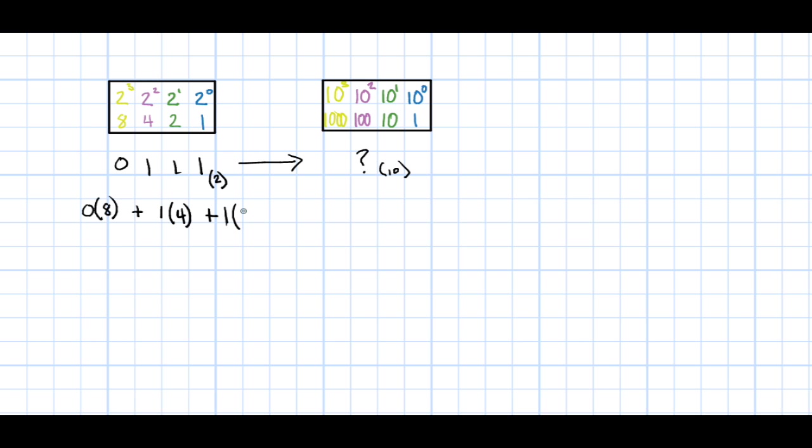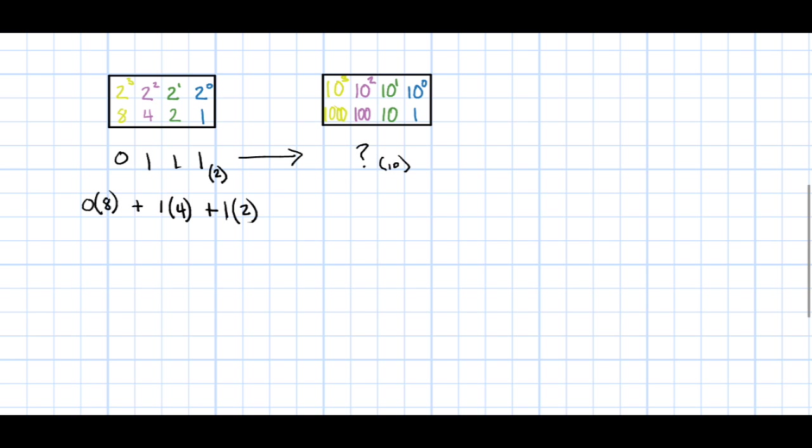In this example, we have 0 times 8, plus 1 times 4, plus 1 times 2, plus 1 times 1. When we simplify this, we get 4 plus 2 plus 1, which equals 7.